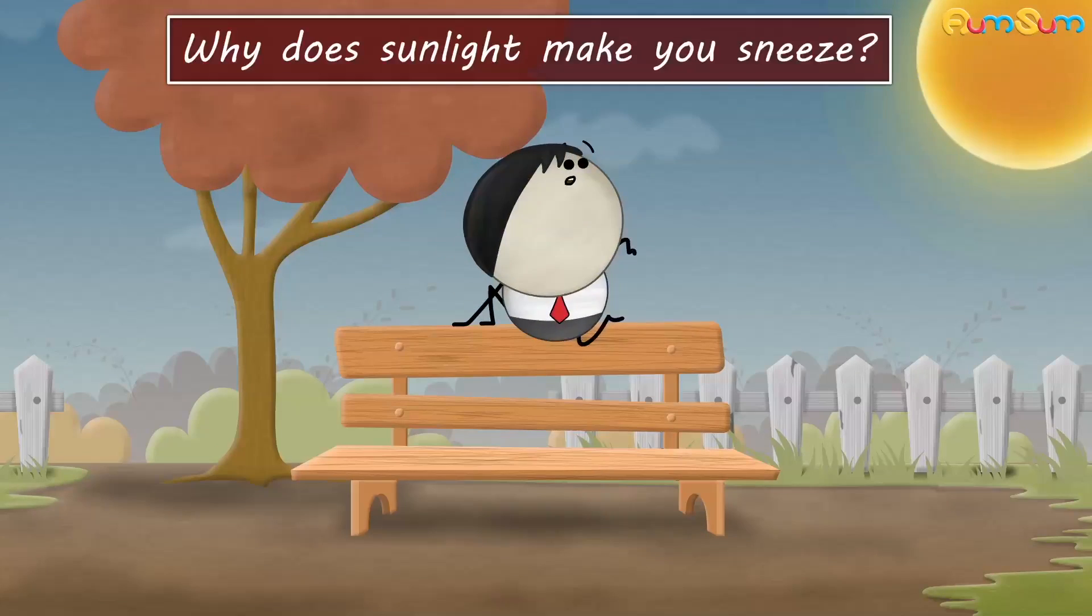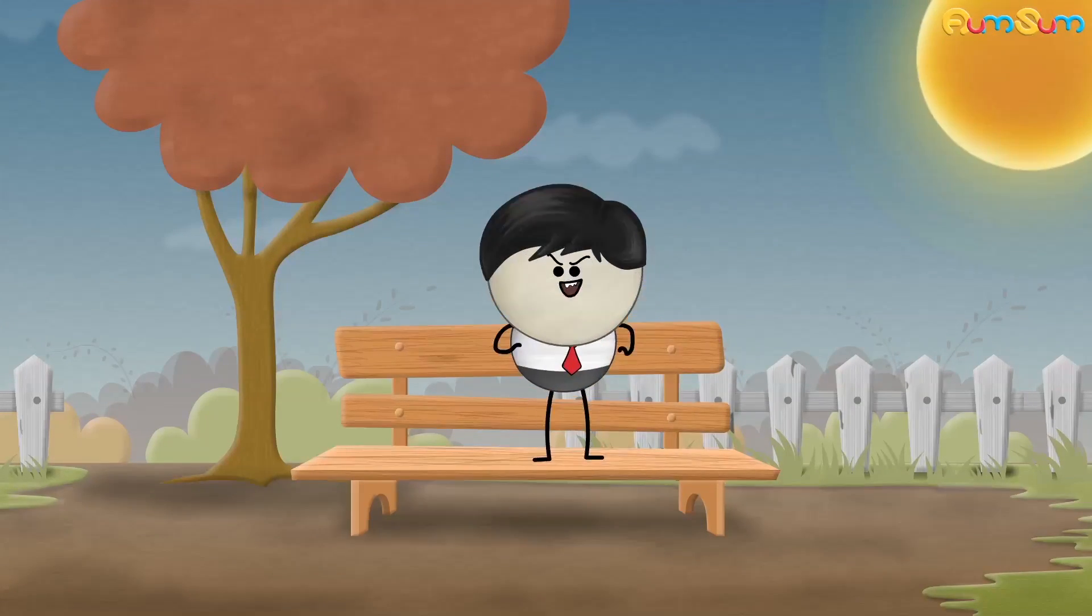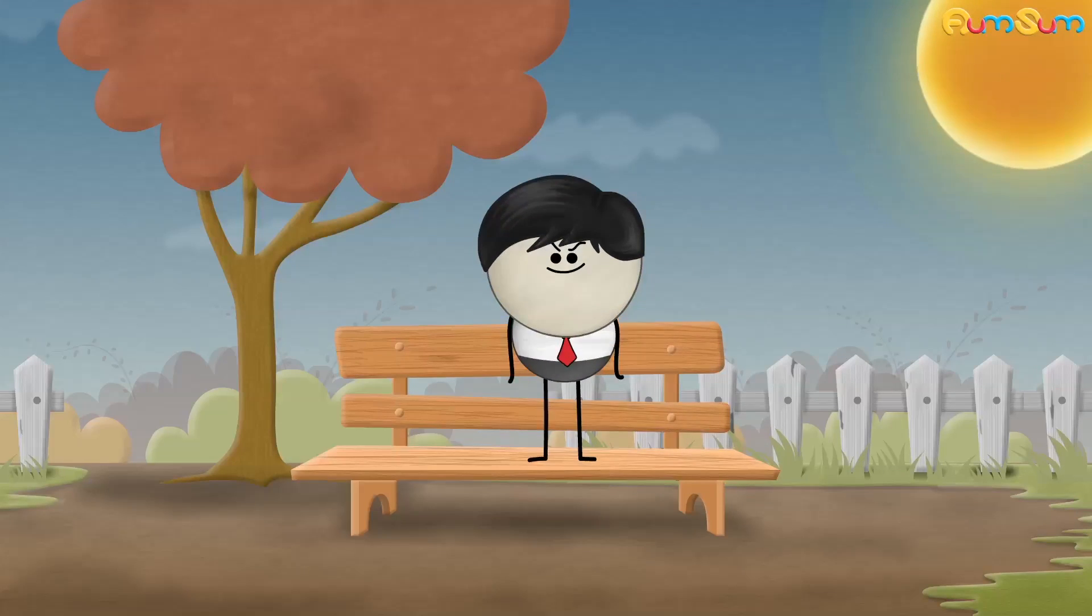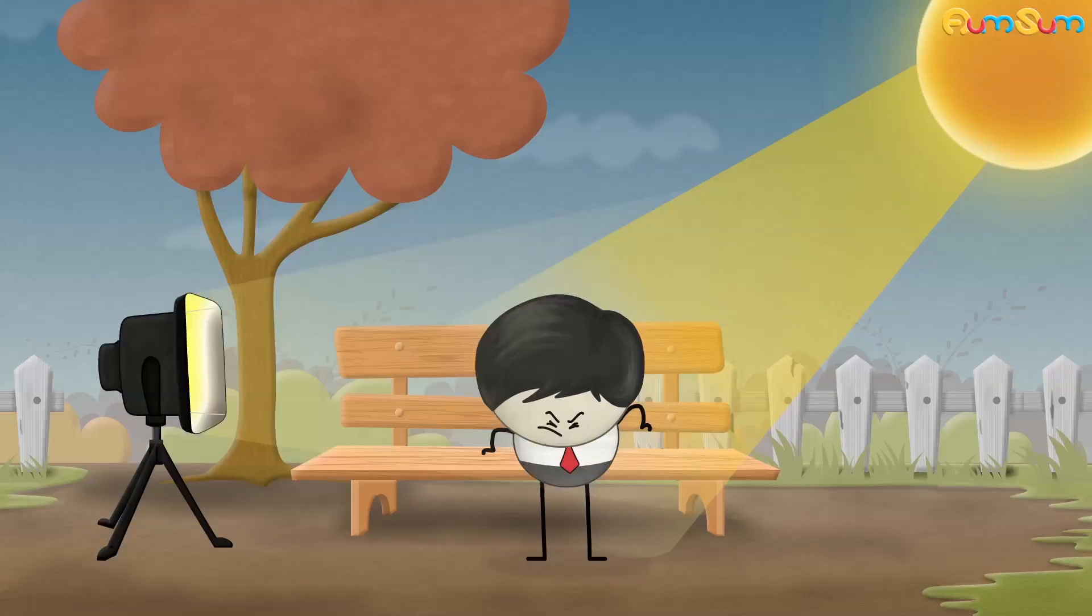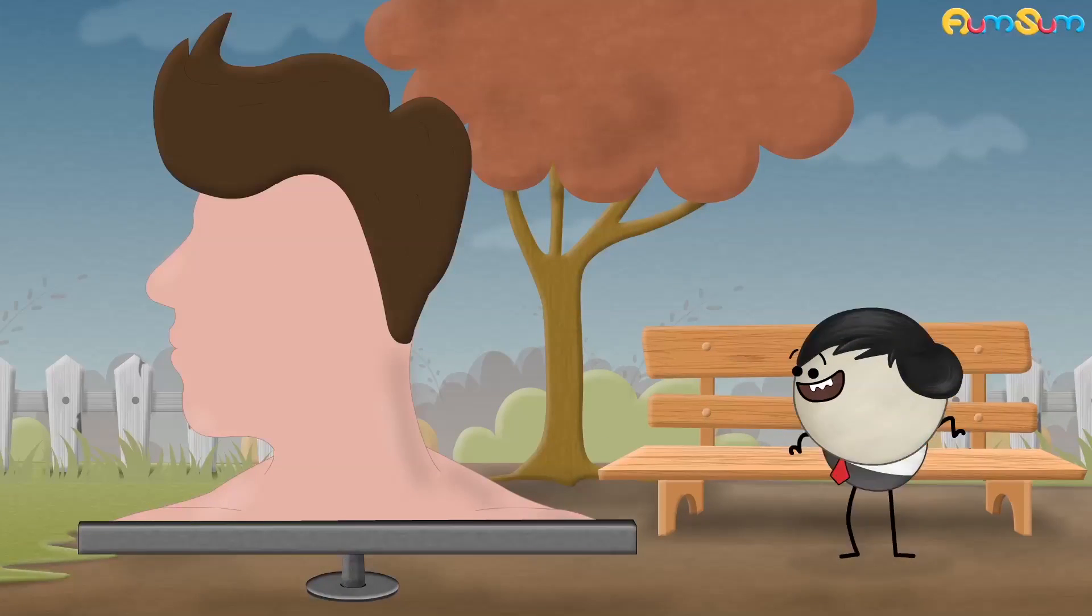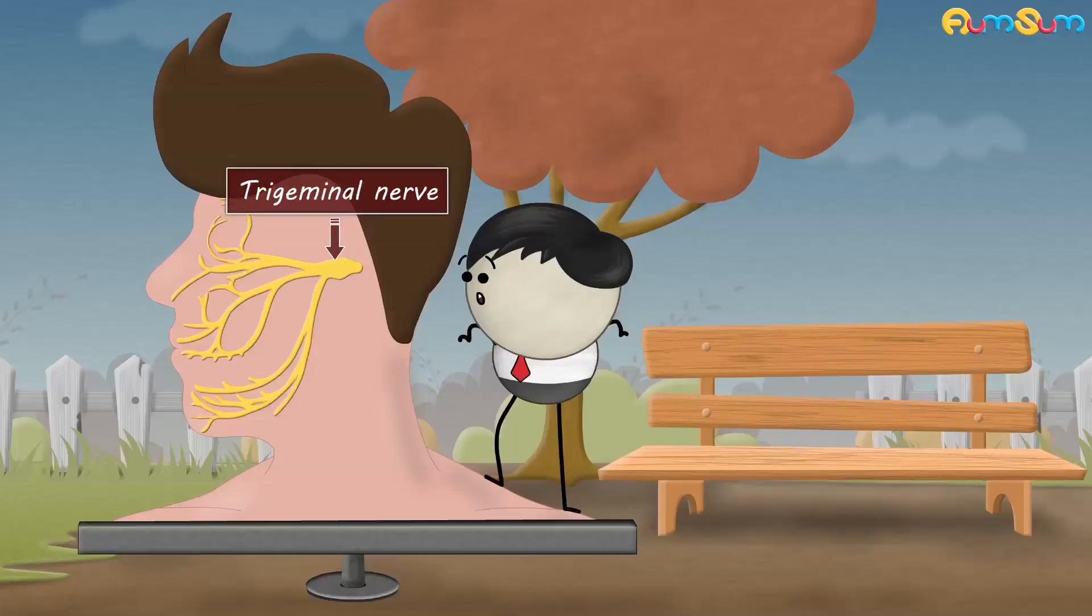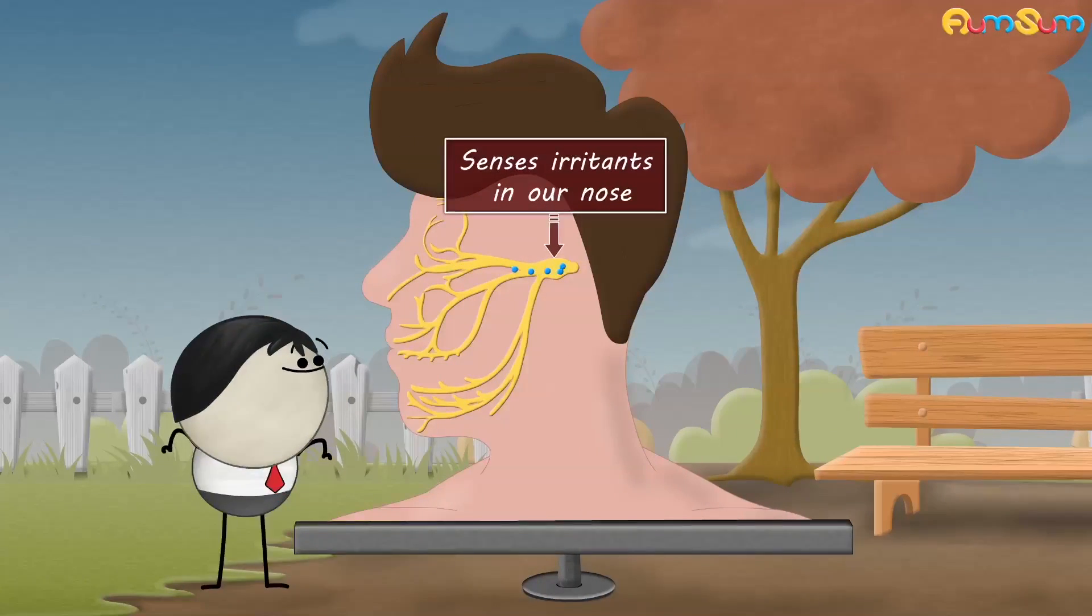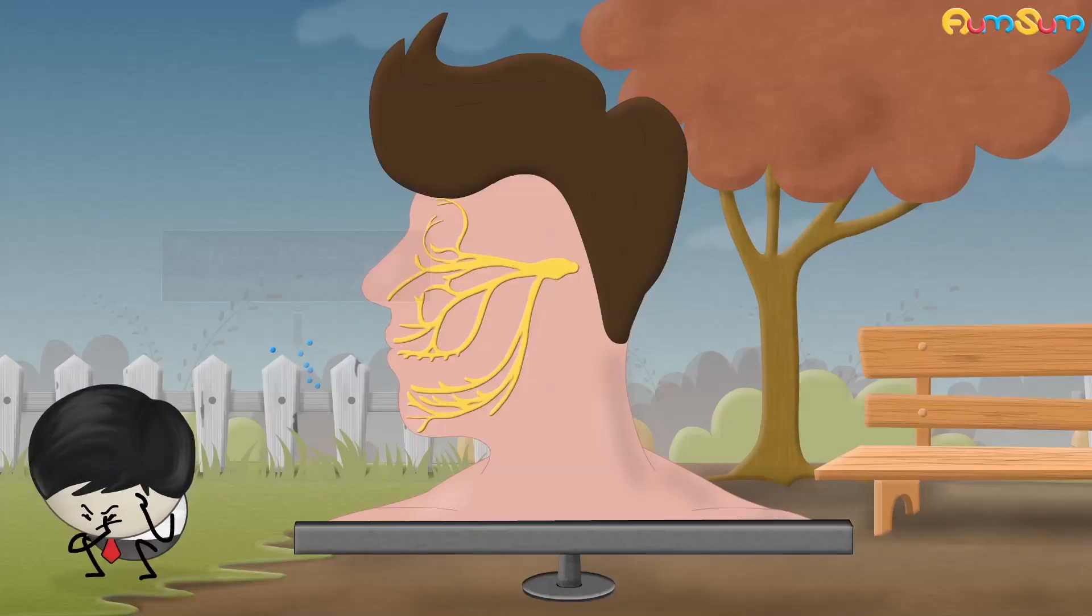Why does sunlight make you sneeze? Because sun teases our nose. No. Wait. I will explain. Sneezing caused by sunlight or bright light is called photic sneezing. According to a prevailing theory, it happens because of a thick nerve bundle called the trigeminal nerve. The trigeminal nerve detects or senses irritants in our nose and thus triggers sneezing to expel them out.